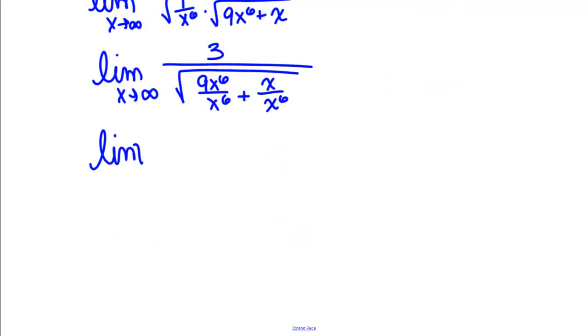We get the limit as X goes to infinity of 3 divided by the square root of 9 plus 1 over X to the 5th.